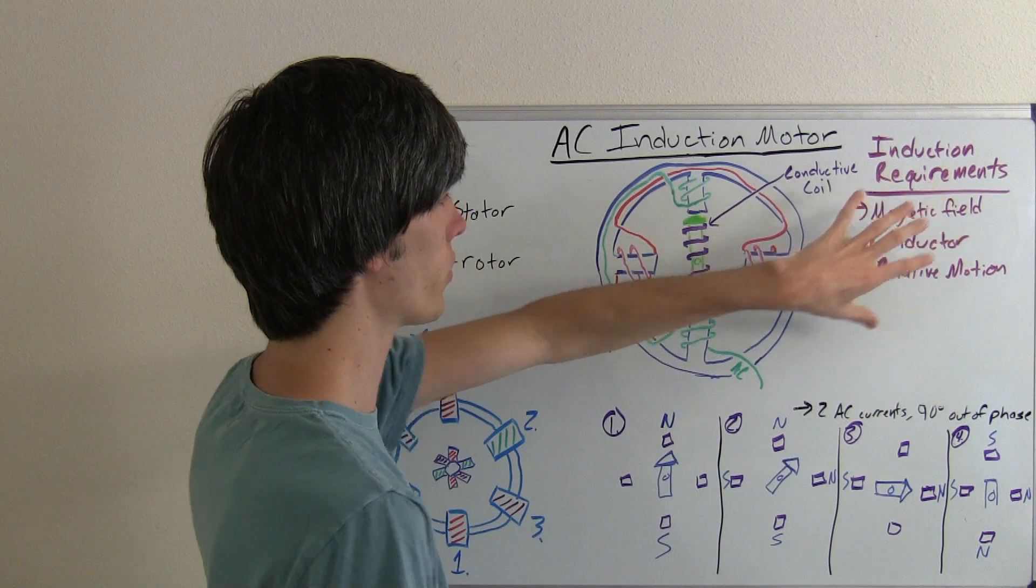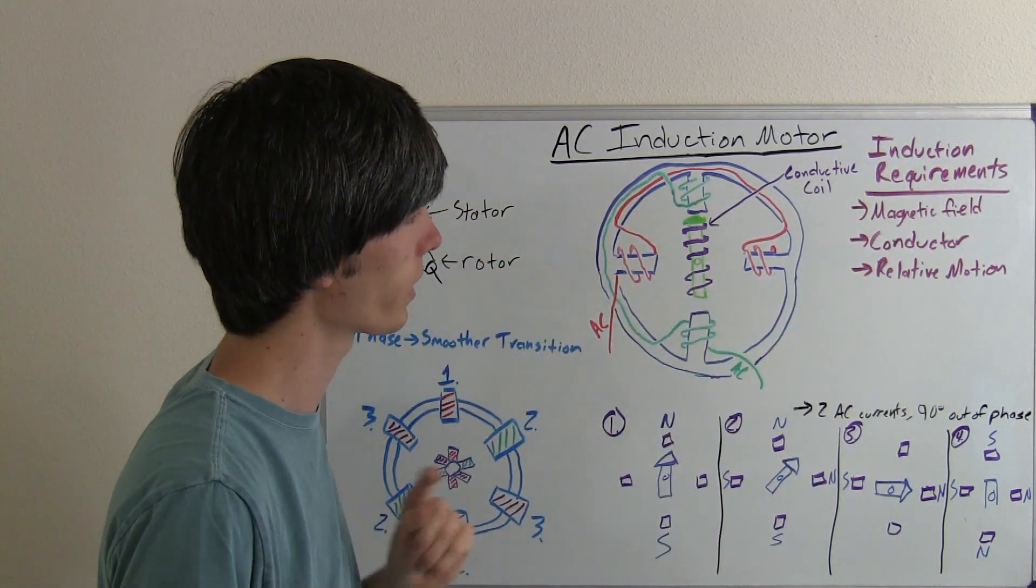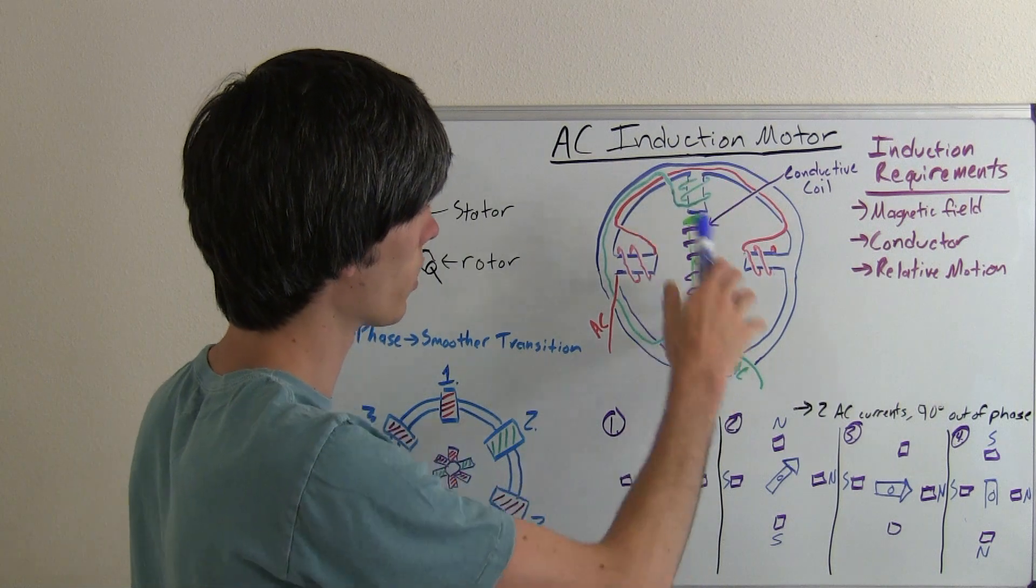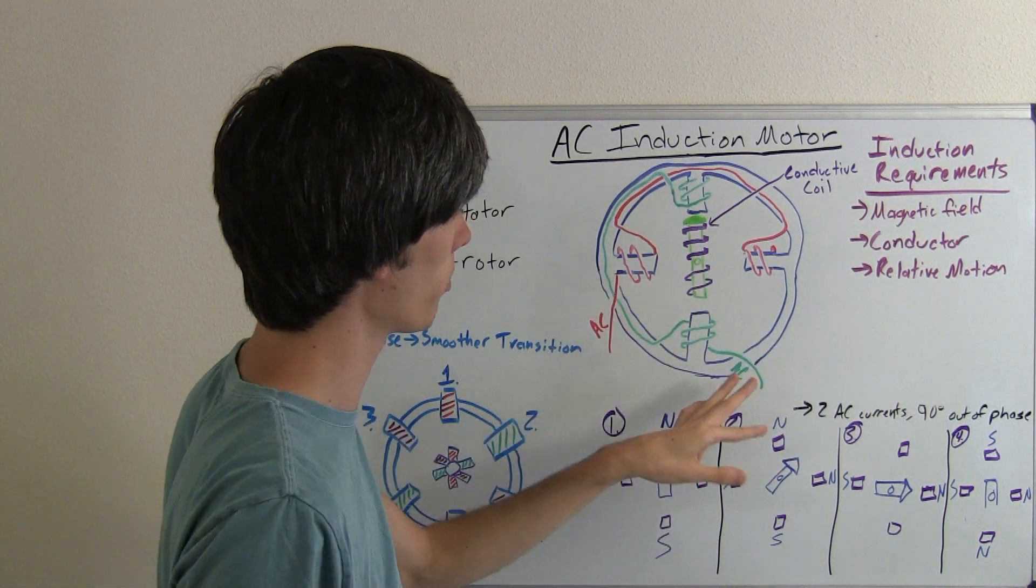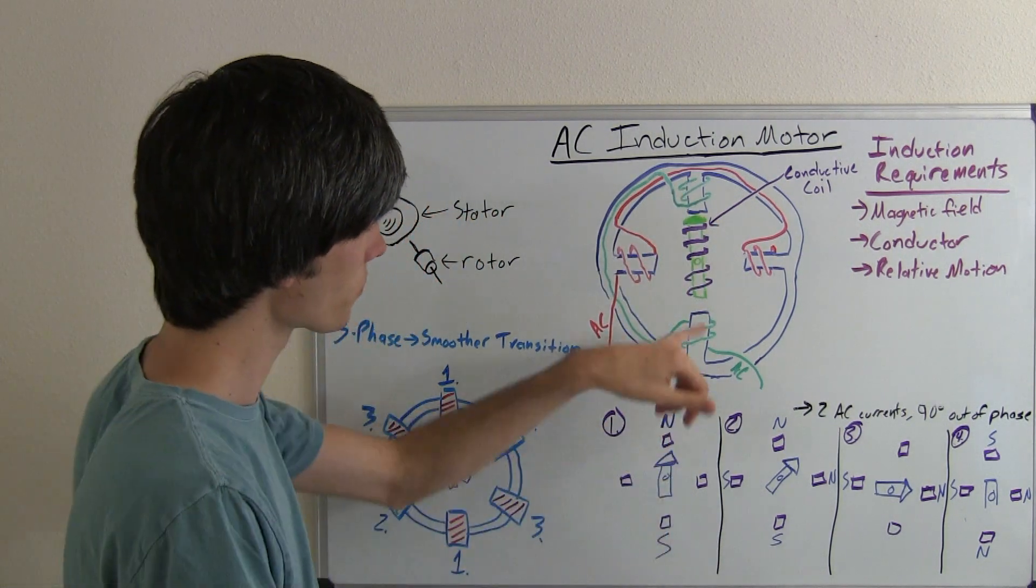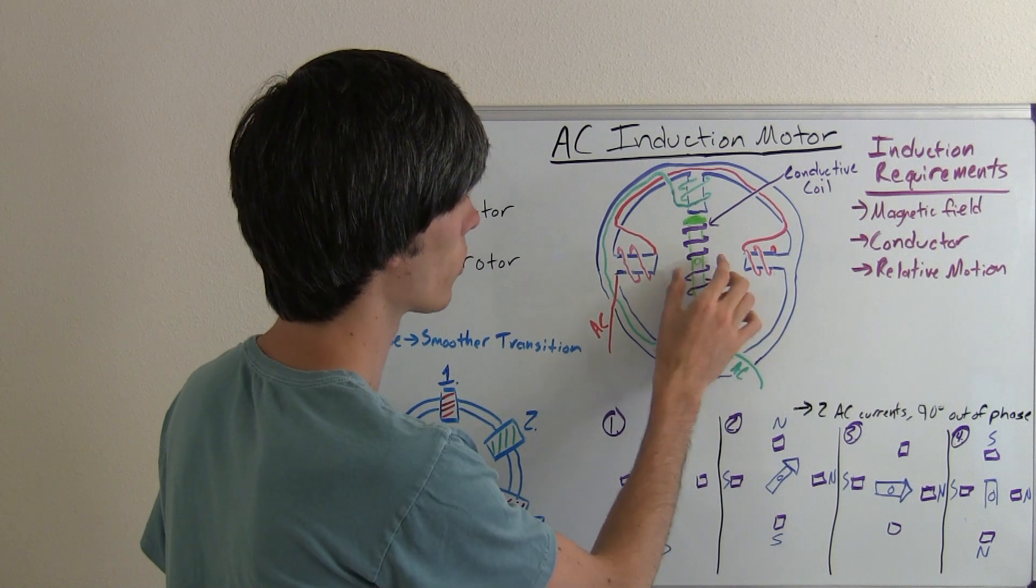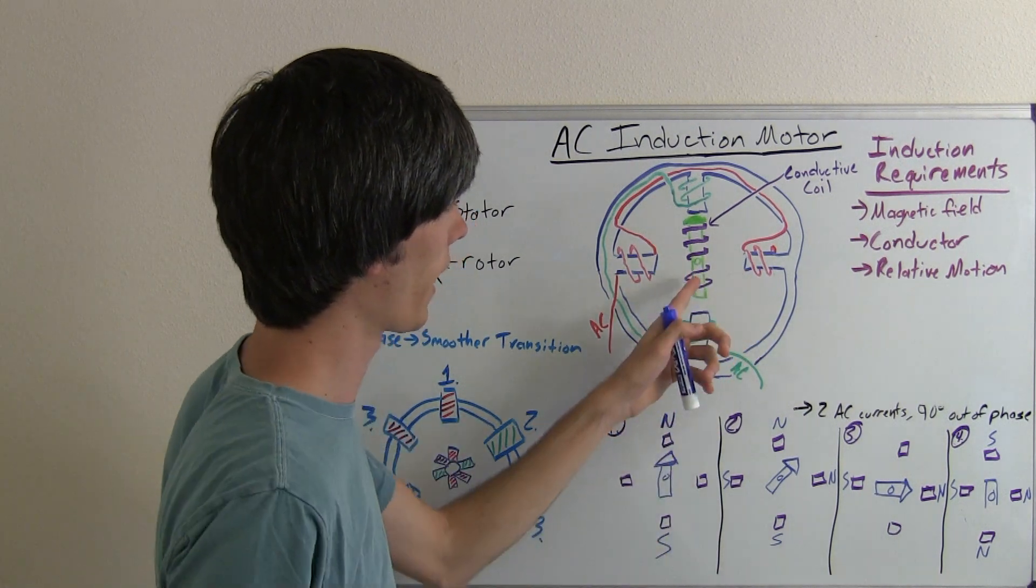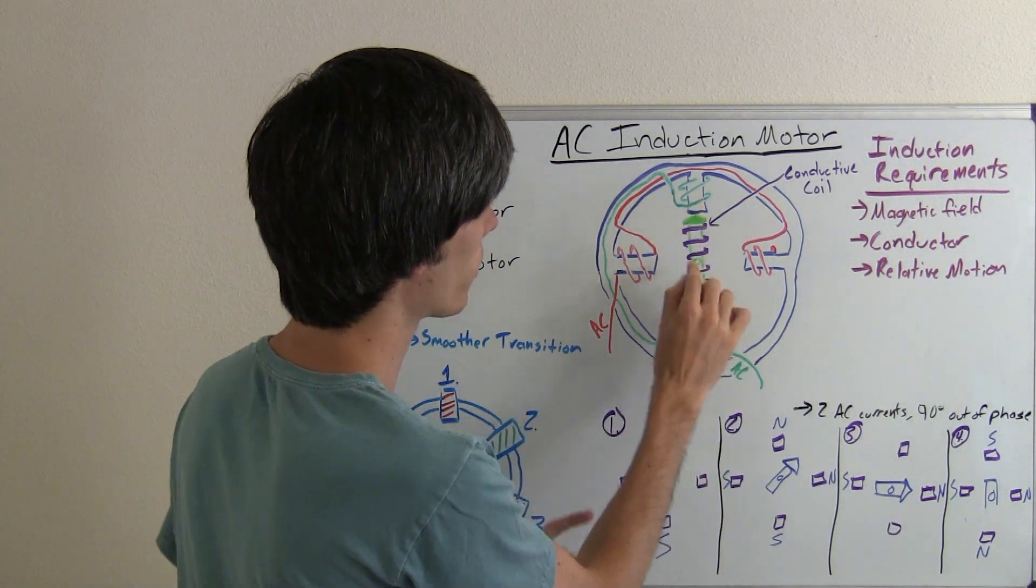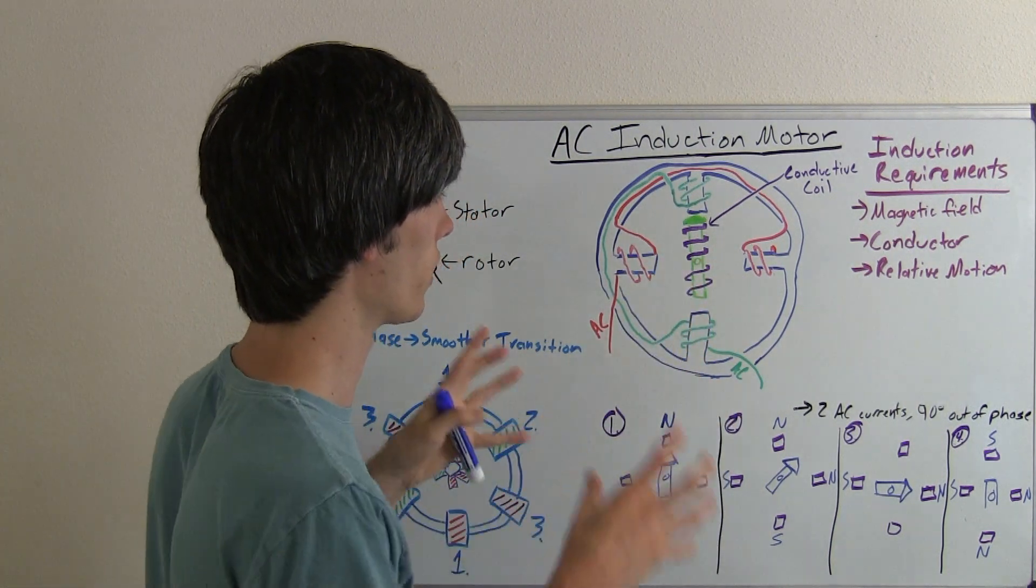So in order to induce a current into those coils, we need to have three things. We need to have a magnetic field, which we've got here, which we're creating with these alternating current power sources and the coils we're creating electromagnets. We need a conductor. This is going to be the conductor. We've got a coil wrapped around a rod here, and that coil pivots about this point. So that's going to be our conductive coil that we can induce a current in.